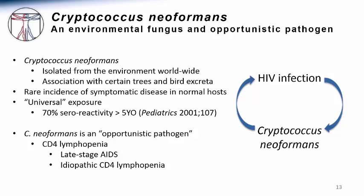CD4 lymphopenia is most characteristic and most commonly seen in patients with late-stage AIDS, since the CD4 lymphocyte is the target of the HIV virus. There are other states of CD4 lymphopenia: certain immunosuppressant medicines target this cell, and a condition not associated with HIV — idiopathic CD4 lymphopenia — presents similarly with low CD4 counts. All of these conditions of CD4 dysfunction predispose patients to Cryptococcus neoformans infections.